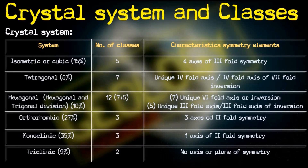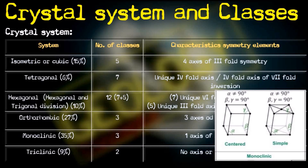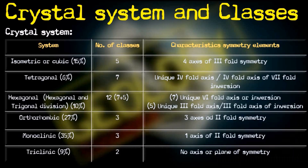Next is the monoclinic system. About 35 percent of minerals crystallize in this system. All three crystallographic axes are of unequal length. The angle between the a and b axes and between the b and c axes is 90 degrees, whereas the angle between the a and c axes is not equal to 90 degrees.